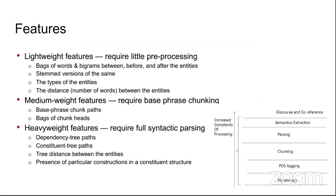Features for relationship extraction fall into three categories. Lightweight features include bag-of-words, bigrams, unigrams, entity mentions, and stemmed/lemmatized word versions — these require only minimal preprocessing. Medium-weight features require chunking: base phrase chunk paths, paths between entities, and bag of chunk heads. Heavyweight features require full syntactic and dependency parsing, which is not easy, may introduce errors, and is generally not recommended despite being an option.